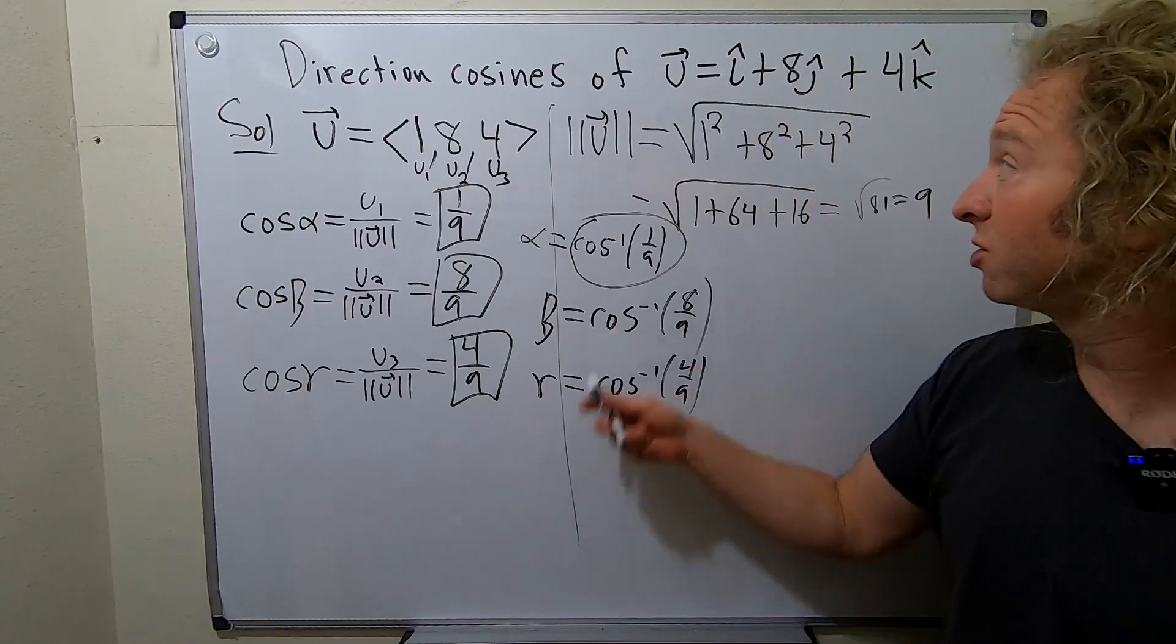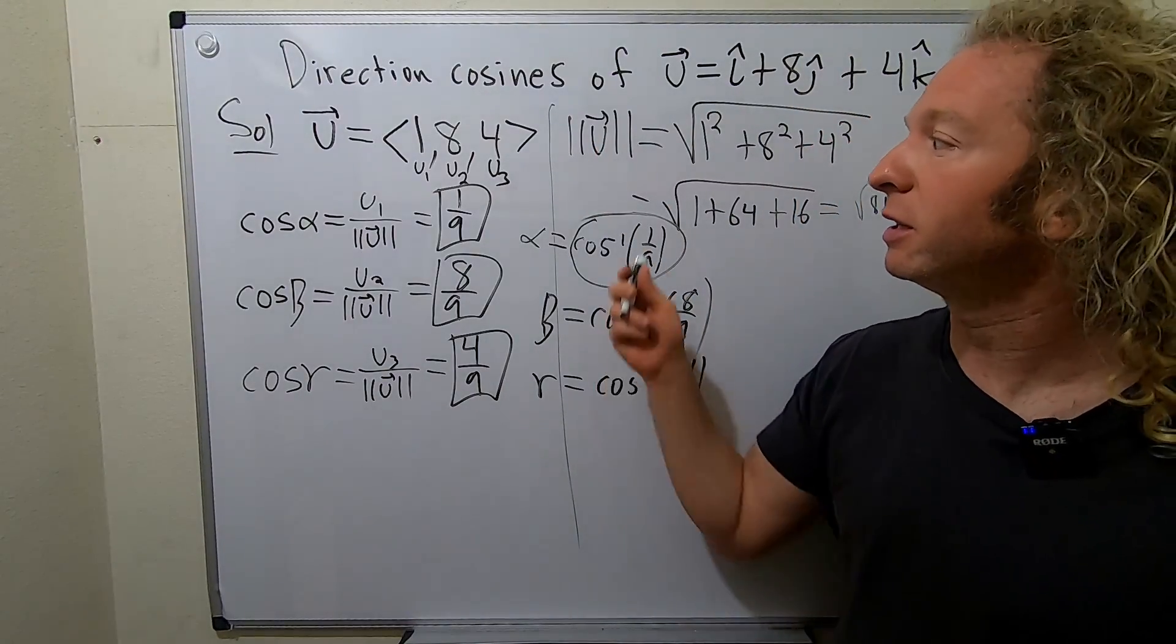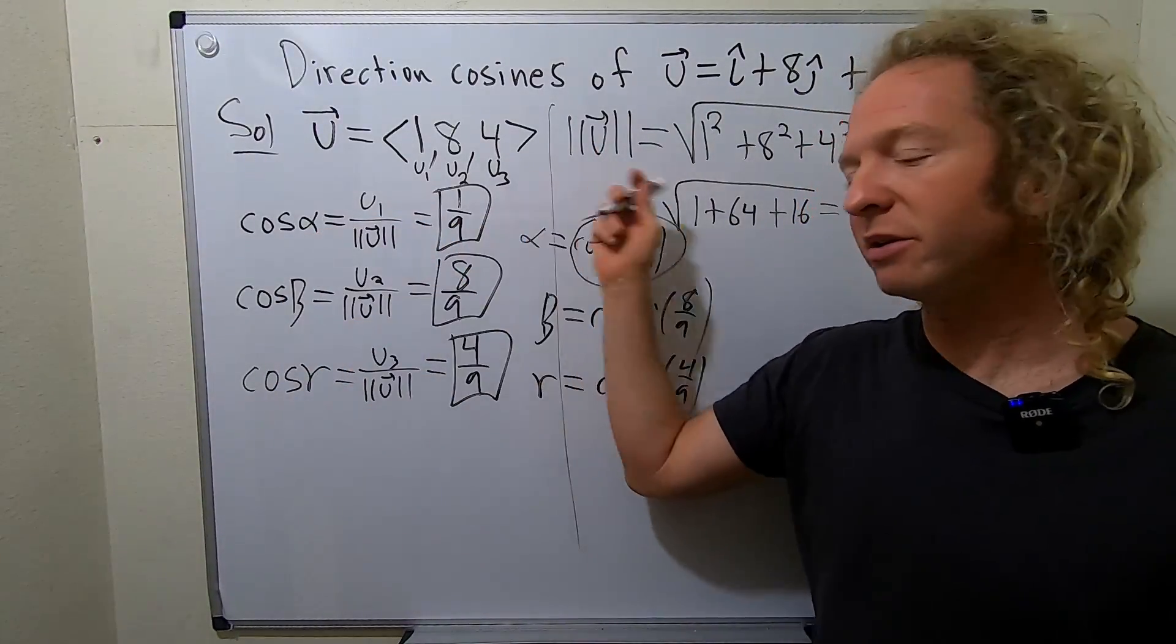So, that's it. That's how you find the direction cosines. Step 1, put it into component form. And then these are the formulas, and that's it. Take care.